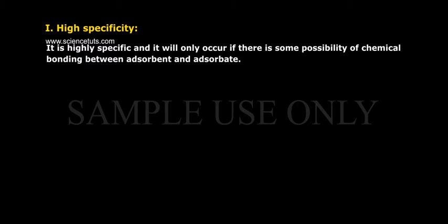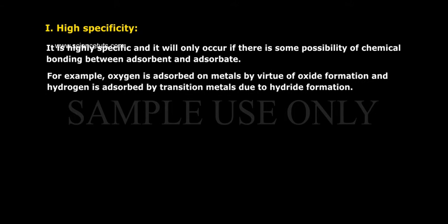Characteristics of chemisorption. 1. High specificity: It is highly specific and will only occur if there is some possibility of chemical bonding between adsorbent and adsorbate. For example, oxygen is adsorbed on metals by virtue of oxide formation, and hydrogen is adsorbed by transition metals due to hydride formation.